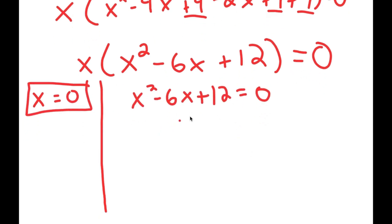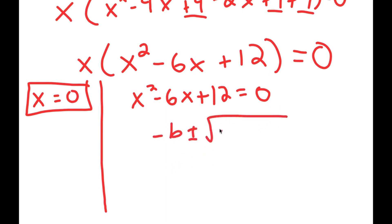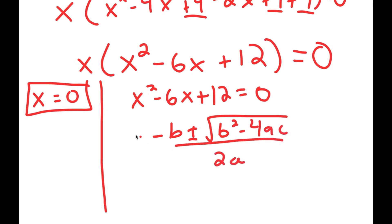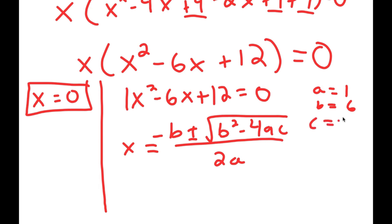And x squared minus 6x plus 12 equals 0 — to solve this, we're going to have to use the quadratic formula: negative b plus or minus the square root of b squared minus 4ac, all over 2a. So in this case, a is 1, b is 6, and c is 12.